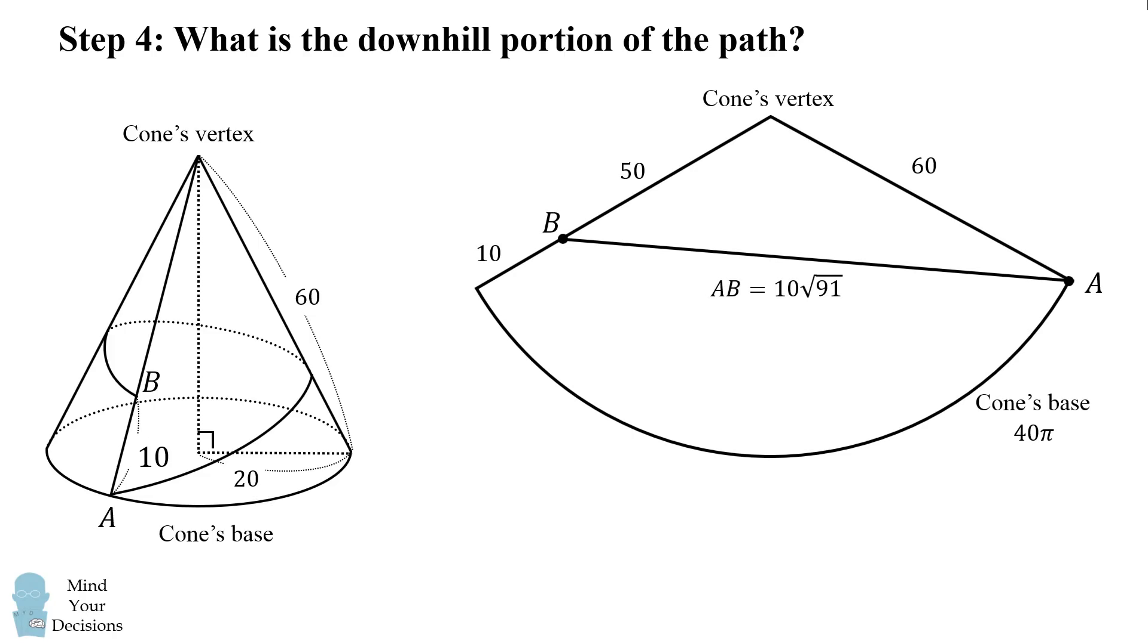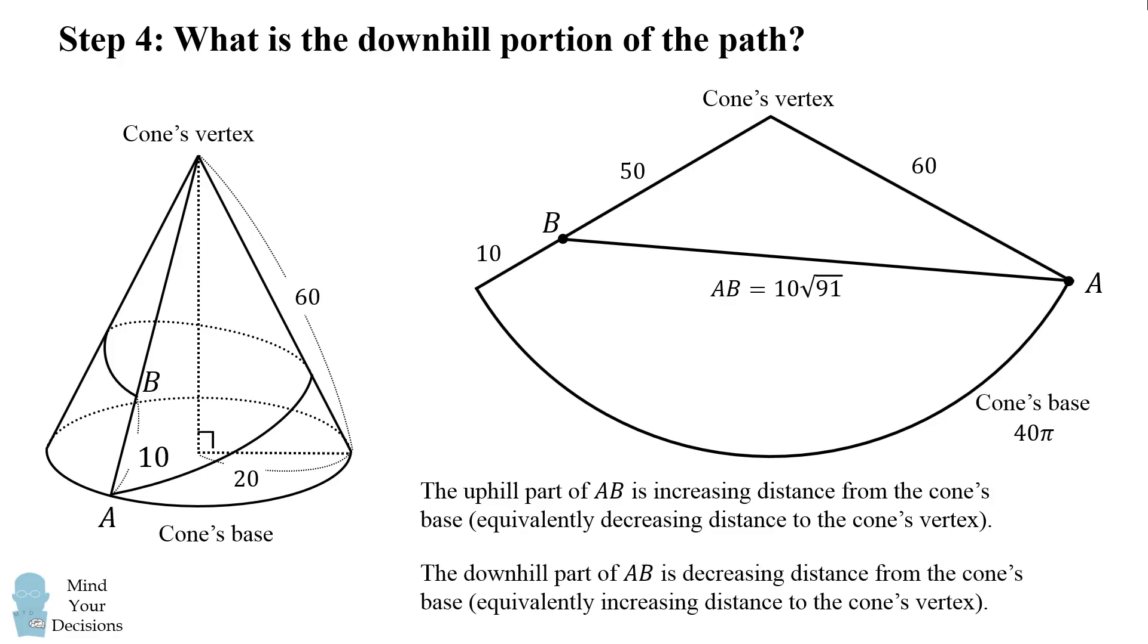So we're making good progress. But now, what is the downhill portion of the track? We know the total length of the track, but we're asked to figure out the downhill portion. So the uphill part of AB is increasing distance from the cone's base, which is equivalently decreasing distance to the cone's vertex. The downhill part of AB is decreasing distance from the cone's base, which is equivalently increasing distance to the cone's vertex.